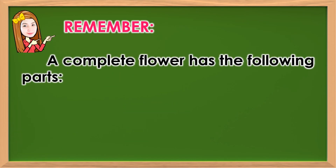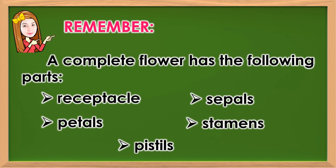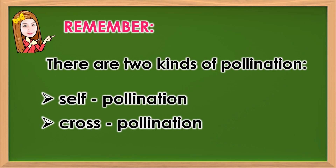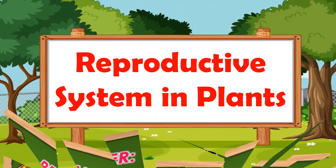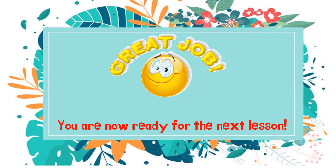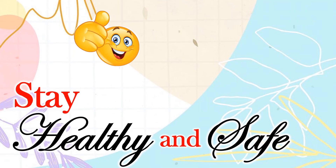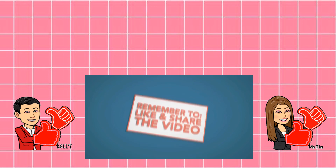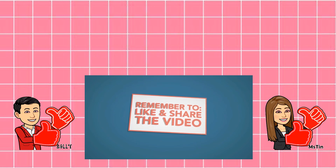Remember, a complete flower has the following parts: receptacle, sepals, petals, stamens, and pistils. There are two kinds of pollination: self-pollination and cross-pollination. That's all for today. I hope you had a great time learning in Science 5. Thank you for watching. See you next time!